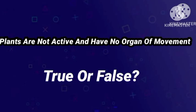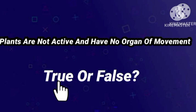Question number three: plants are not active and have no organ of movement — true or false? The right answer is true. Plants are not active and have no organ of movement, while animals are active and have organs of movement.